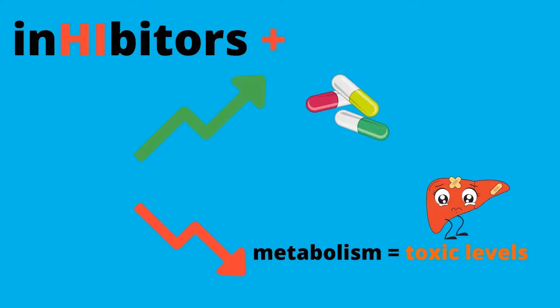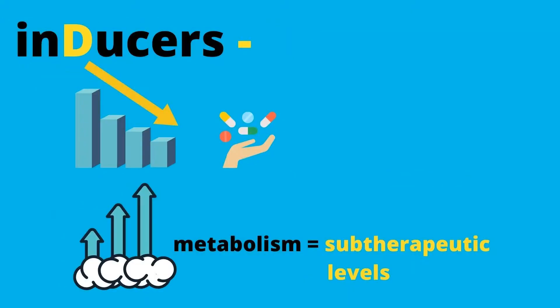When there's a buildup, drug clearance is much slower, which leads to the drug being toxic in the system. Remember, the drug level is opposite to the metabolism — the test may ask about drug level versus metabolism, so become familiar with it. Inhibitors increase the drug level because there is a decrease in metabolism, leading to toxic levels of the drug in the system.